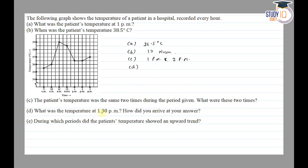Part D asks: what was the temperature at 1 PM, and how did you arrive at your answer? At 1 PM we look at the graph and find the corresponding point on the y-axis. It is between 36 and 37, so the temperature is 36.5 degrees Celsius.